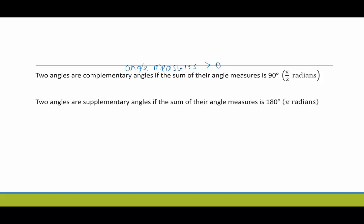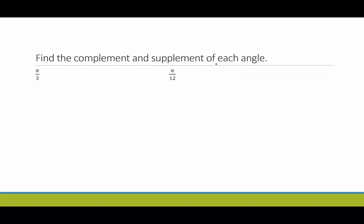Also, two angles are supplementary if their angle measure adds up to 180 degrees or pi radians. And again, the angle measures have to be positive, they must be greater than zero. Let's look at some examples. We want to find the complement and the supplement of each angle, if possible.